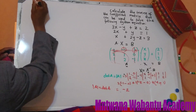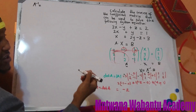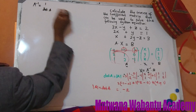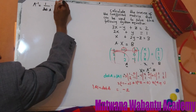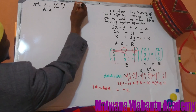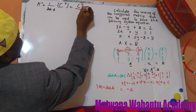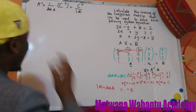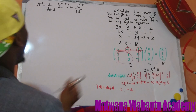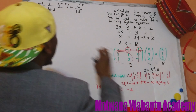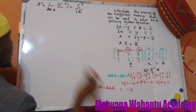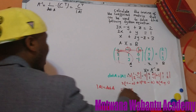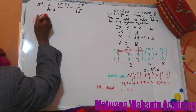Now remember we want to get the matrix inverse. To get the matrix inverse, the formula is: 1 over the determinant of the matrix, multiplied by the transpose of the cofactor matrix. Sometimes written as transpose of cofactor over determinant. So what's next - we're going to have to find the cofactor of A before we can get the transpose of the cofactor.